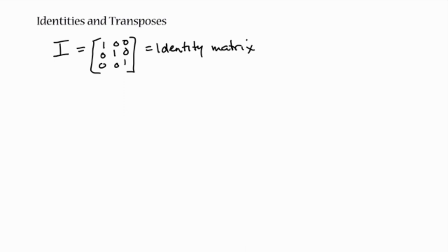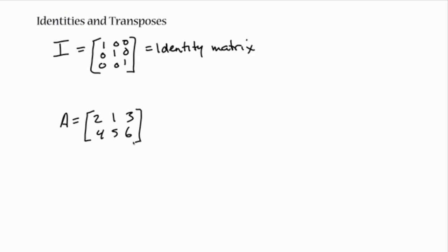A matrix transpose: for any matrix capital A, I'm going to define a matrix A — it's going to have two rows and three columns, so that's a two by three matrix. If I transpose that matrix, transposing basically means rotating it — flipping its rows for columns.